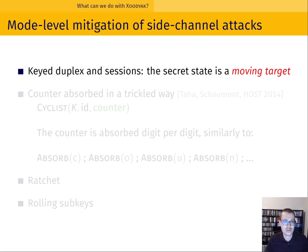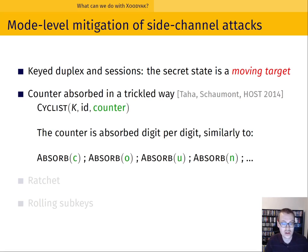Zodiac provides multiple ways of mitigating side channel attacks. One such way is through the use of sessions. In the keyed mode of a session-based authenticated encryption scheme, the secret state is a moving target — with each string you absorb, the state changes, so there is no long-lived key. In addition, the cyclist object supports an optional counter parameter which serves as a nonce, except that it is absorbed in a trickled manner. This trickling reduces the degrees of freedom that the attacker has.